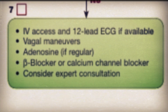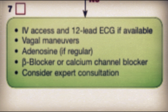Moving to bubble 5, it asks if the QRS is under or over 0.12 seconds. Since it's under, we go to bubble 7. We have IV access. We could have tried vagal maneuvers, but continuing to read: we could give adenosine, but since the rhythm is irregular we shouldn't — it could cause potential harm. We can give a beta or calcium blocker. Both are negative inotropes that weaken heart beat strength but also slow the heart rate, allowing chambers to fill with blood.